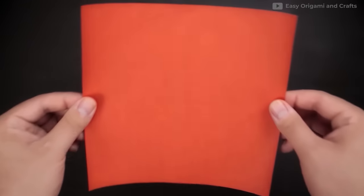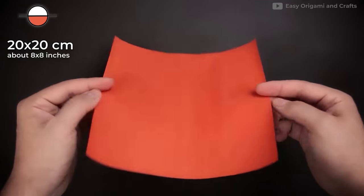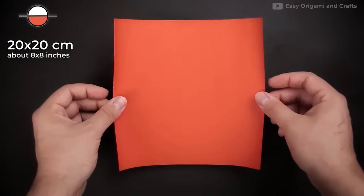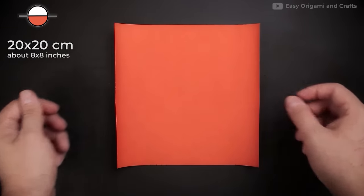In this video I'm going to start with 20x20cm, which is about 8x8 inches. If your paper has a white side, start with the colored side facing down.